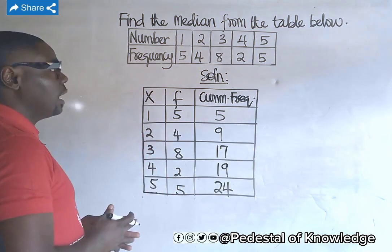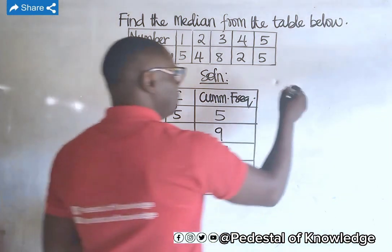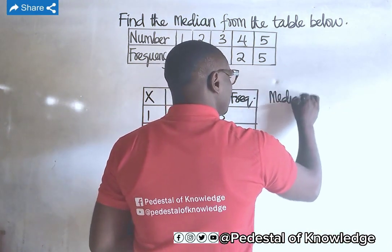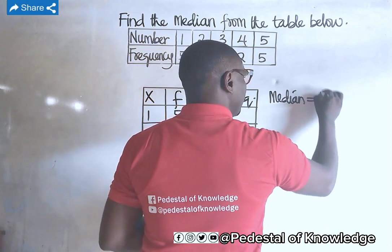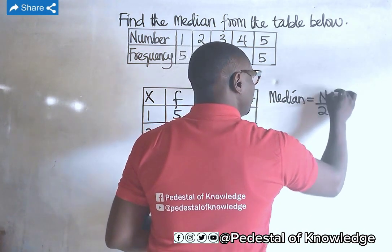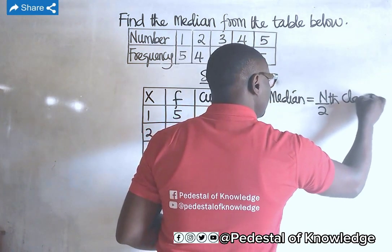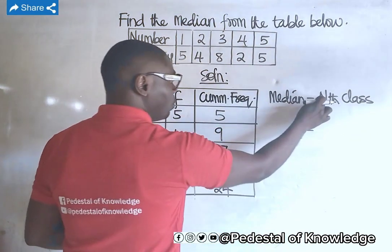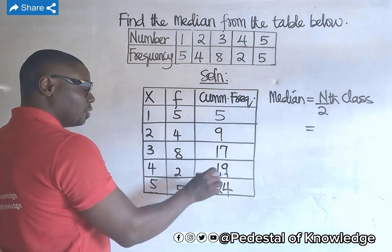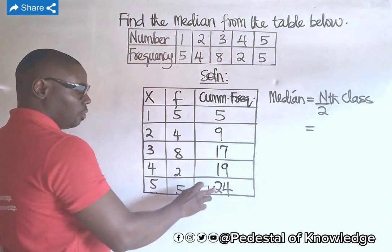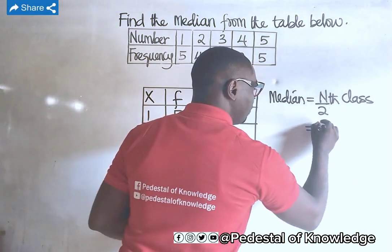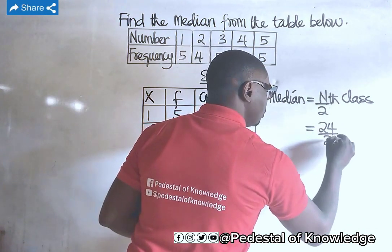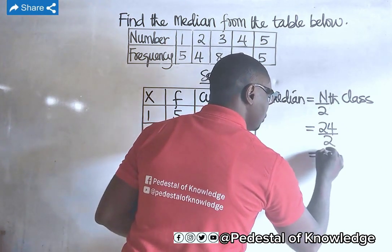Now, remember that the median is equal to the n over 2 class. Here, n is the last cumulative frequency value, which is equal to 24. So we have 24 divided by 2, which is equal to the 12th class.